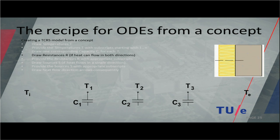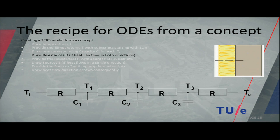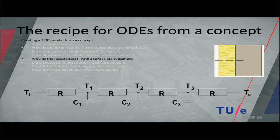The next step is to connect them. In material, we just have conduction, so we have resistances. The third step is to draw all resistances, and also important is to provide them with good subscripts. So we have Ri, R12, R23, and Re.